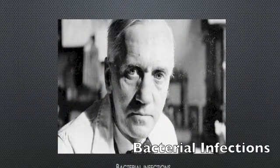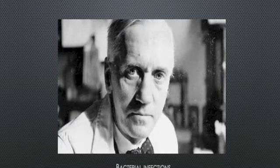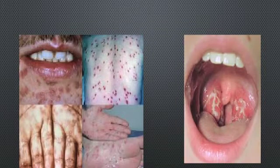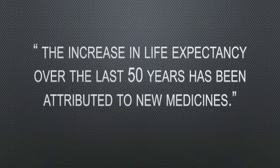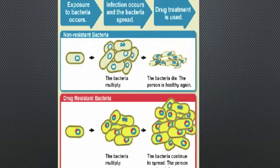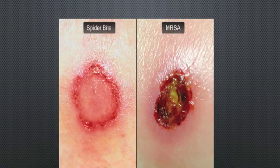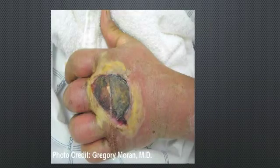The discovery of antibiotics was a great stride for medical history. Advancements allowed diseases such as strep throat, pneumonia, and serious infections such as syphilis to be treated, thus allowing longer lifespans. Scientists such as George Hitchings state that the increase in life expectancy over the last 50 years has been attributed to new medicines. Although advancements in medicines have done very well, with antibiotics comes antibiotic resistance. It weakens the immune system, making it harder for patients to heal from commonly contracted infectious diseases such as MRSA while staying in the hospital.